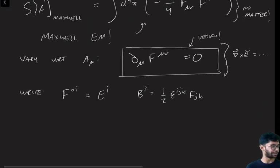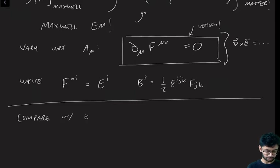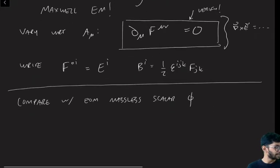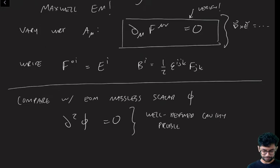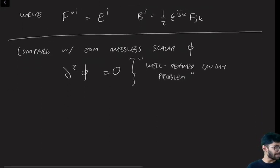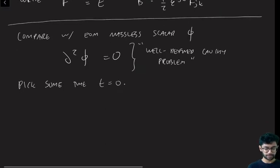Okay, so now I want to point out an interesting fact. Let's compare these equations of motion to the Klein-Gordon equation for a massless scalar field. So let's compare the equation of motion for a massless scalar phi, and the equation of motion is just d squared phi equals zero. So this defines what is called a well-defined Cauchy problem, which is a fancy way to say the following thing. Let's imagine that you pick some time t equals zero. Okay, so I'm going to draw a picture here, here's time, and these directions are space, and so here's t equals zero.